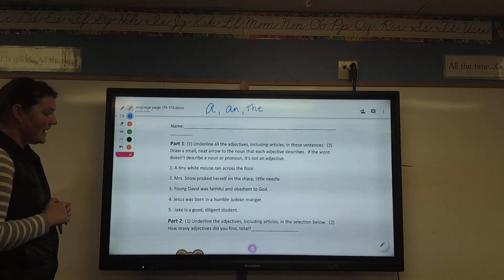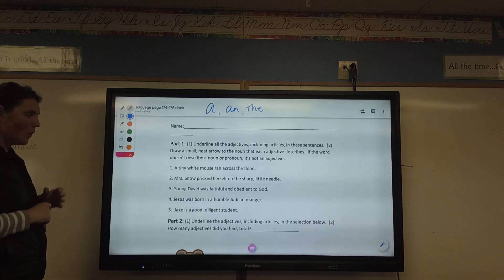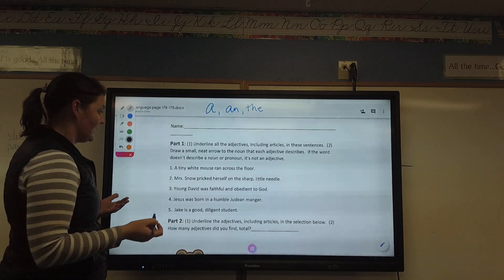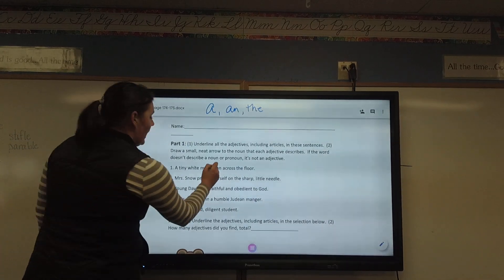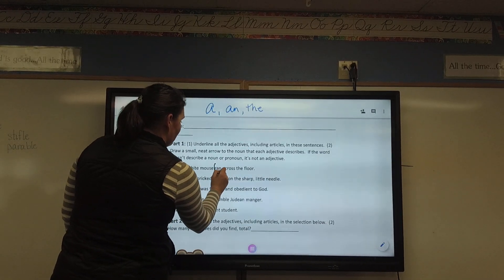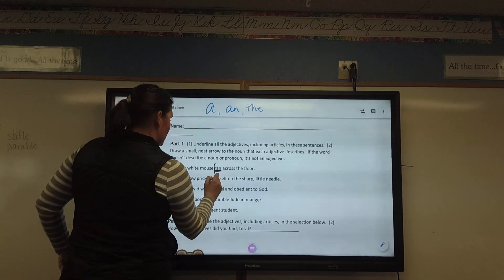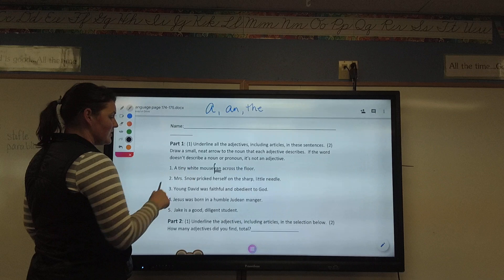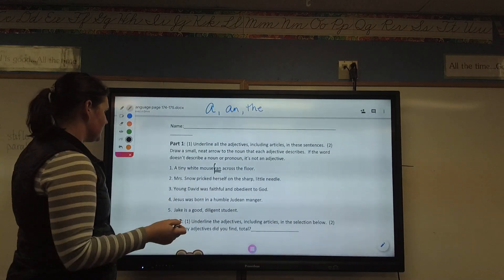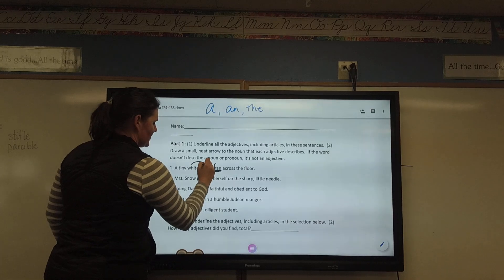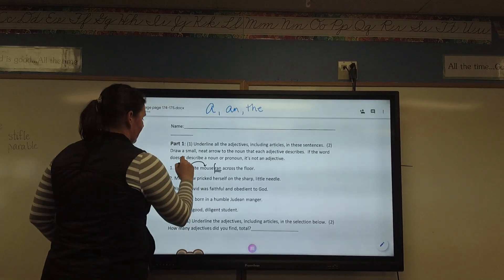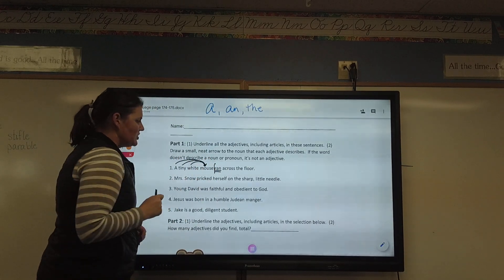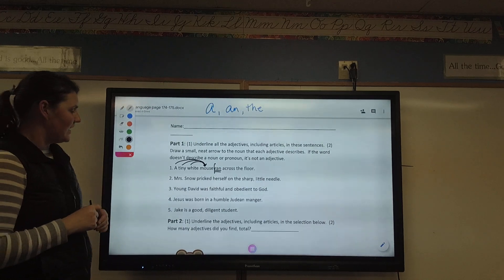So, for example, on number one, a tiny white mouse ran across the floor. Well, if I'm looking at this and I'm not quite sure what my noun is, I'm going to find my subject predicate line first. This isn't the instructions, but I do this anyway. And there's my subject predicate line because there's my verb. So, what ran? A mouse ran. And I don't need to underline the noun, but it's going to be mouse. So, what describes mouse in this sentence? What kind of mouse? A white mouse. What kind of mouse? A tiny mouse. Which mouse? A mouse. So, now I have three things that are all describing mouse.